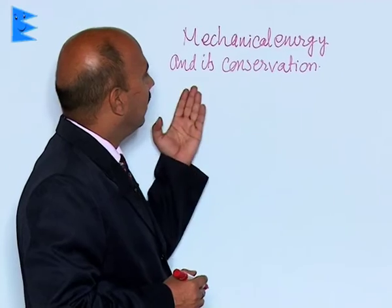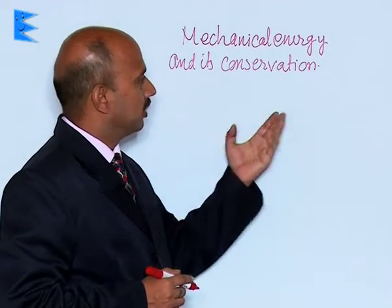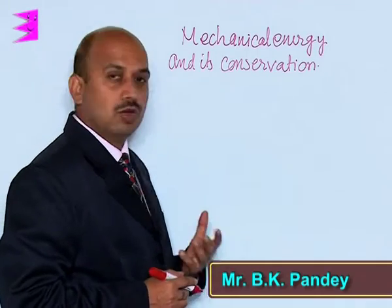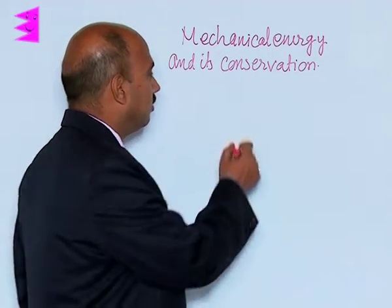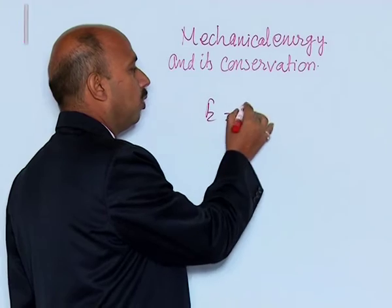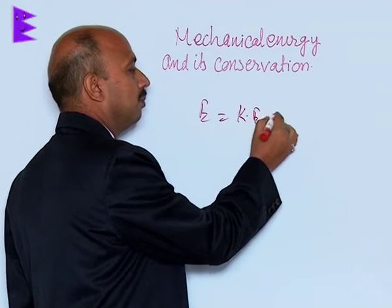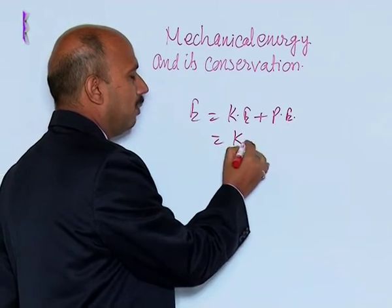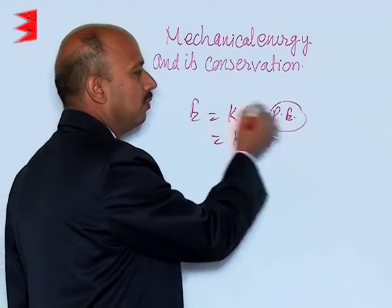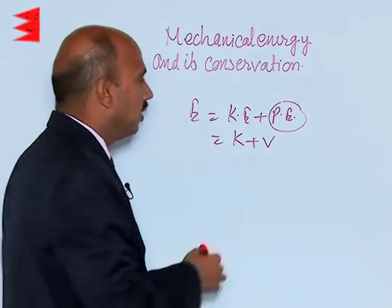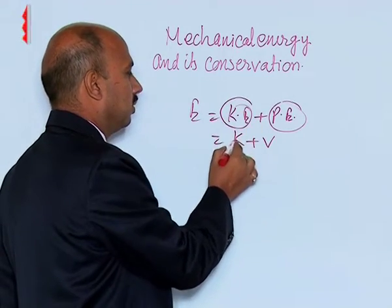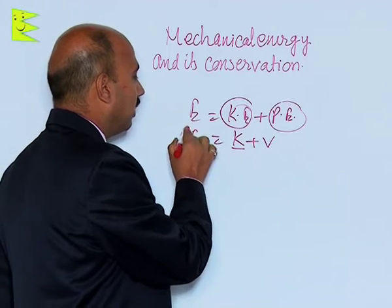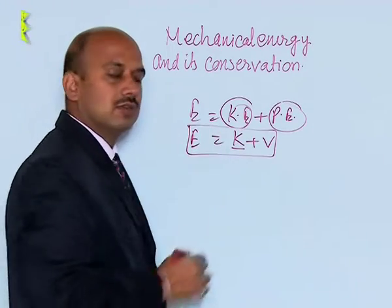Now, we will see mechanical energy and its conservation. The total energy of a body is kinetic energy plus potential energy. We can write it as K plus V, where V is the symbol for potential energy and K is the symbol for kinetic energy. This is known as total mechanical energy.